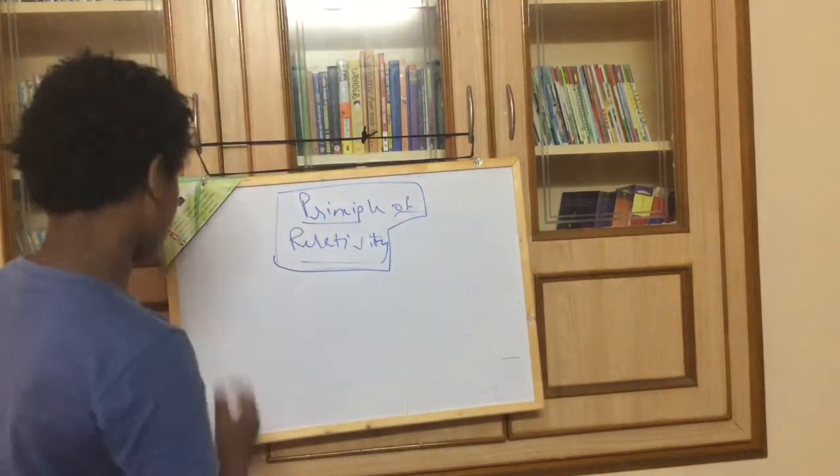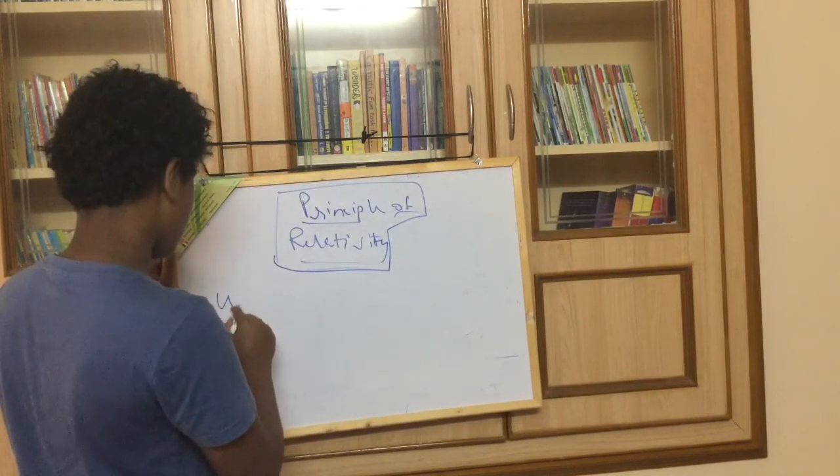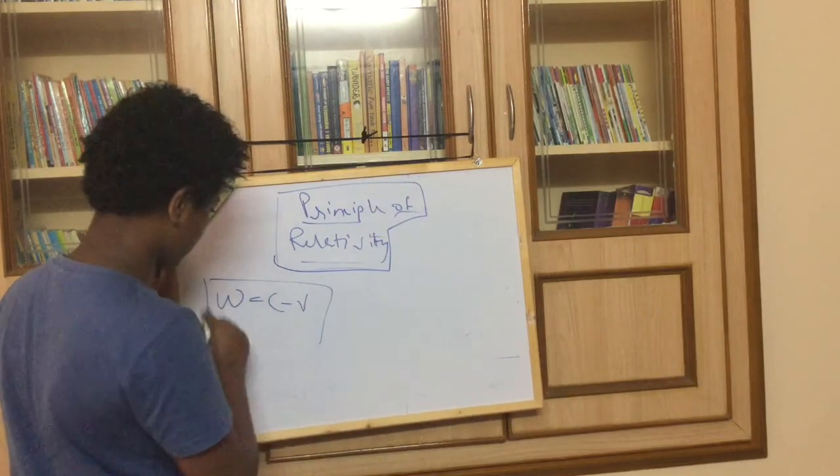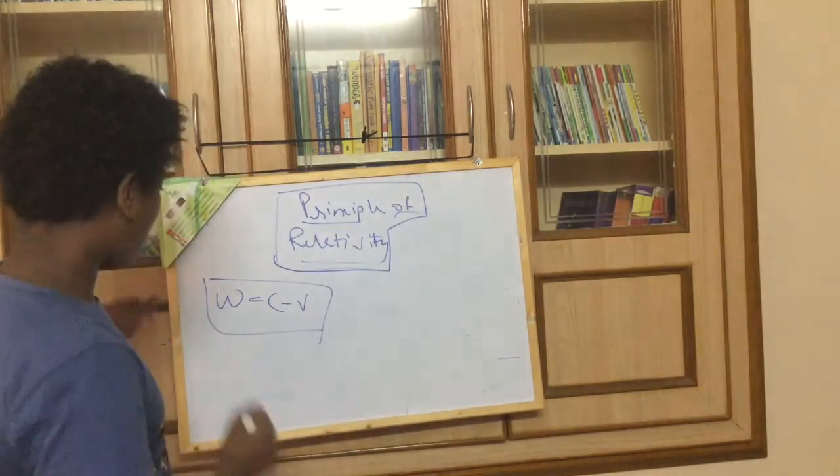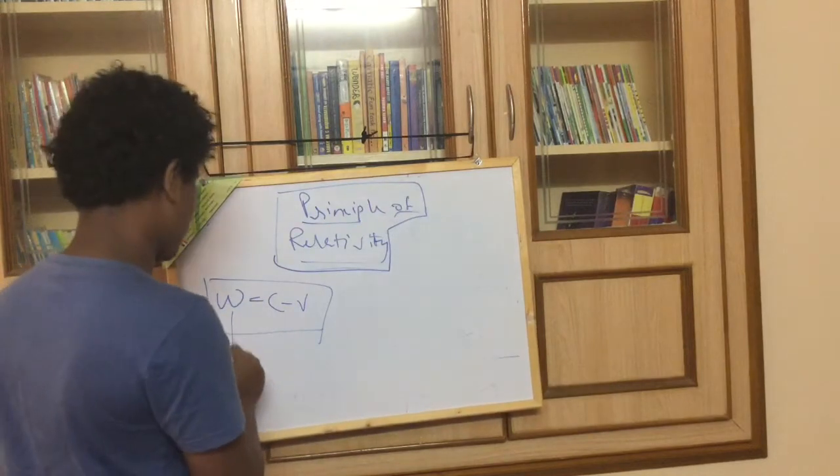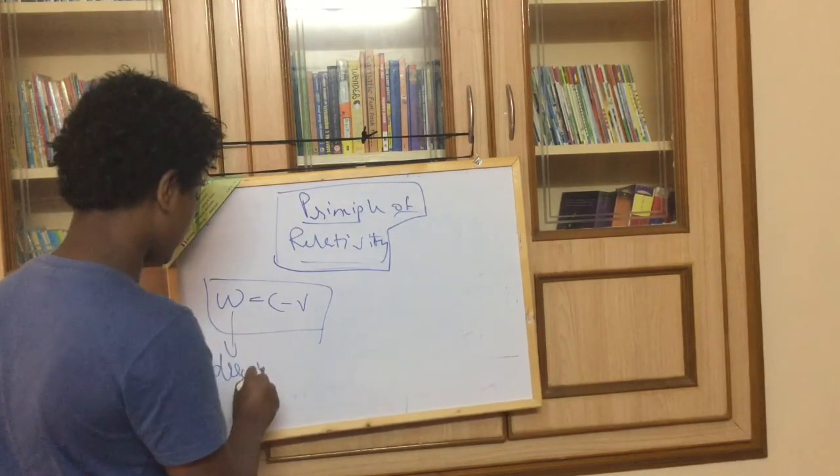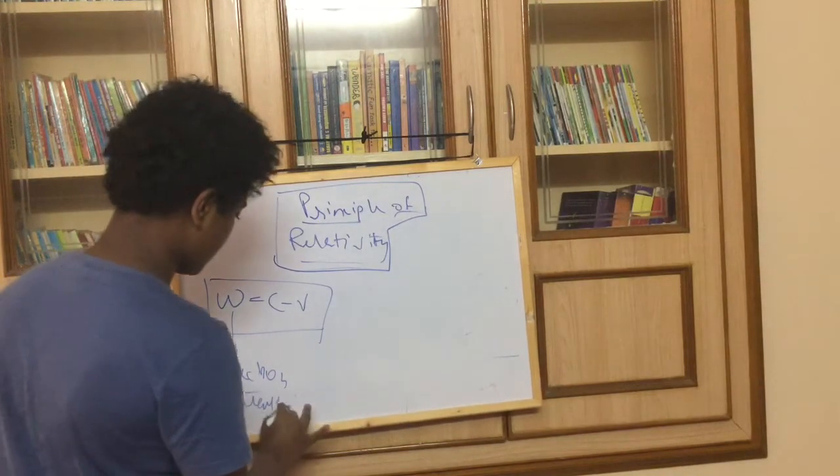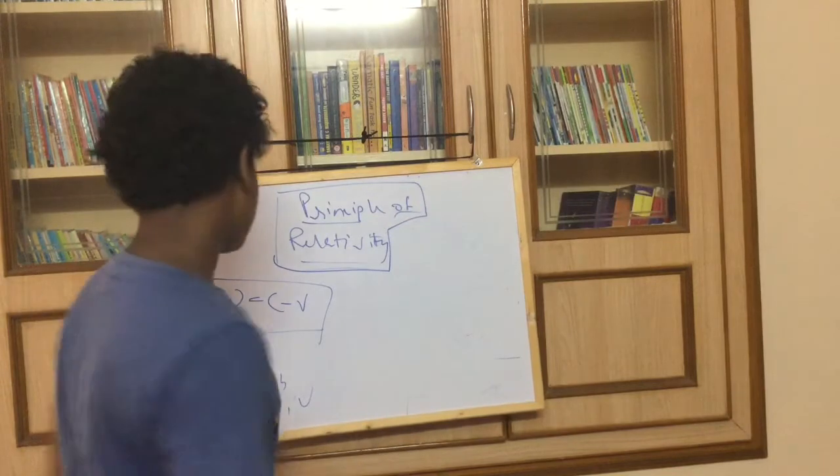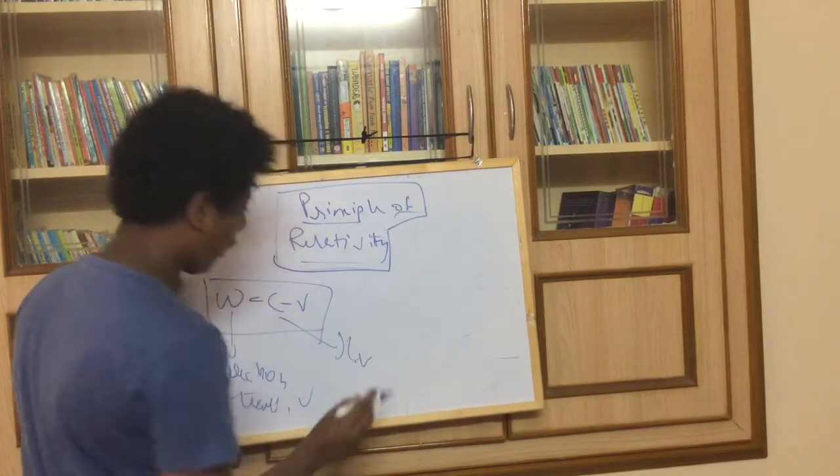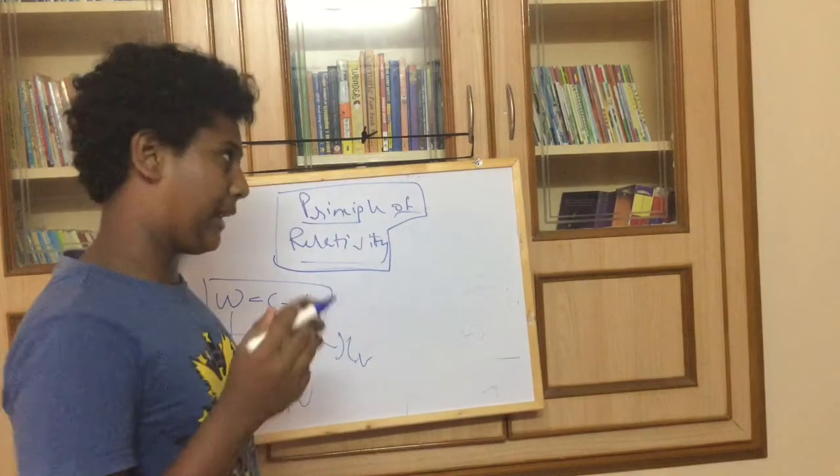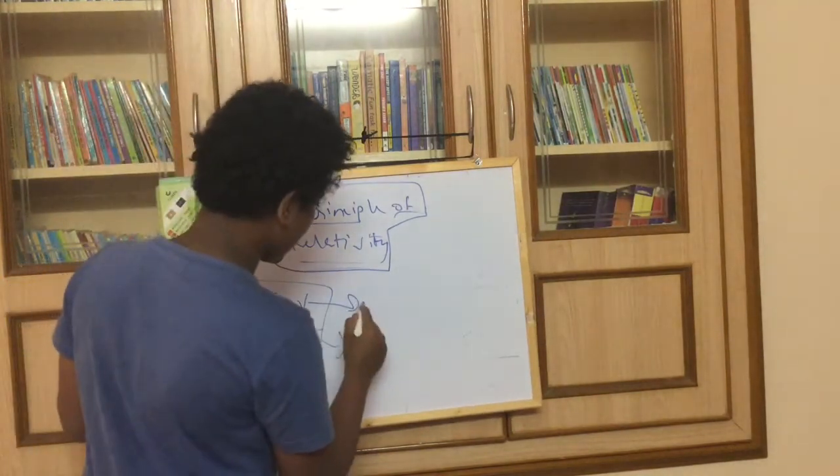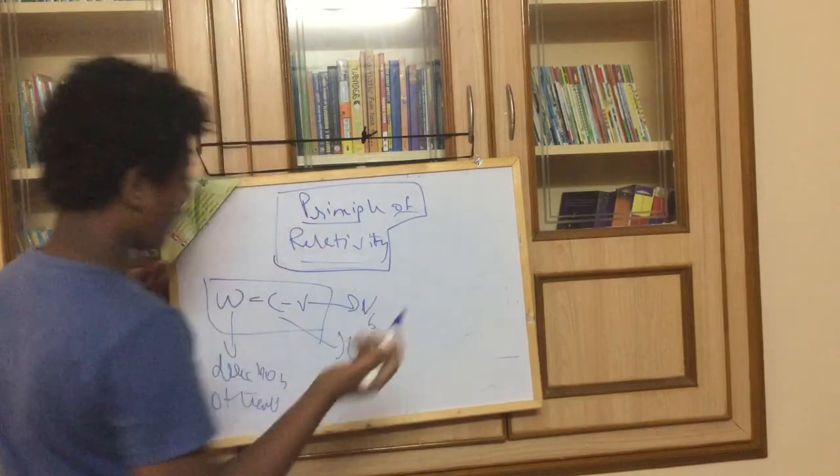According to propagation of light, the value which comes here is W equals C minus B. This is an equation, a framed equation. According to this, W is the direction of travel with velocity. C is the limiting velocity or the maximum speed any object can travel, or the speed of light. And B is the velocity of the body.